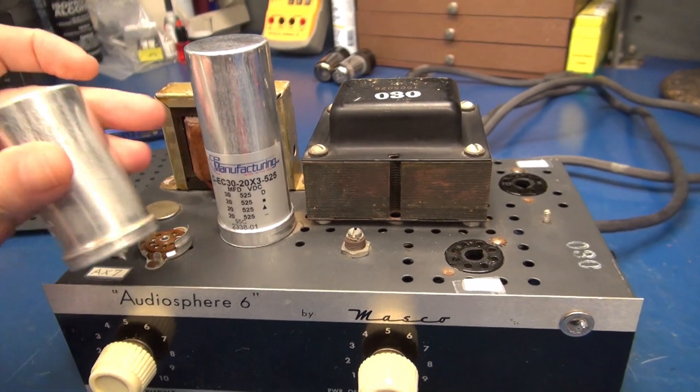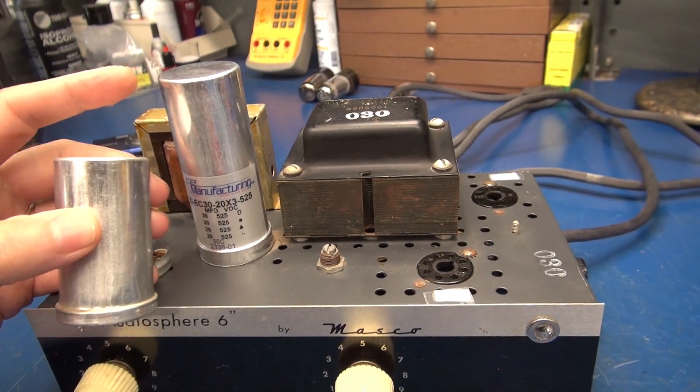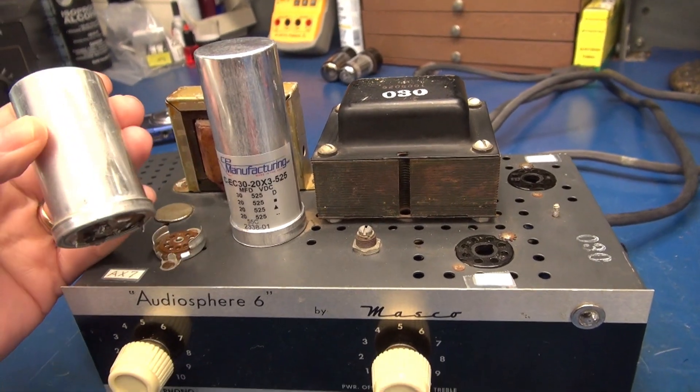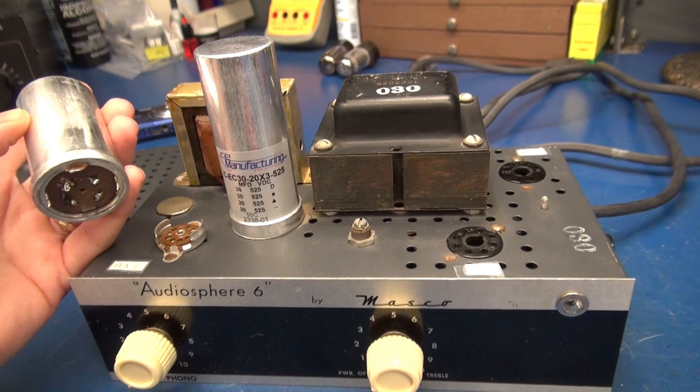All right, there's the new cap in place. Here is the original. So there's about an inch height difference between the two. But I talked to the customer. He said this amp isn't going to sit on top of a speaker. So he didn't mind that the filter cap was a bit taller.